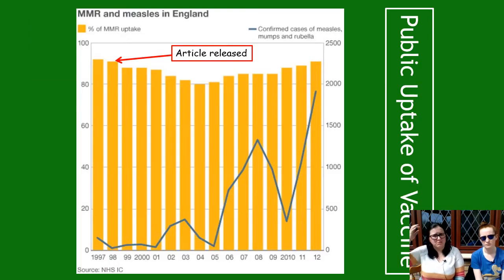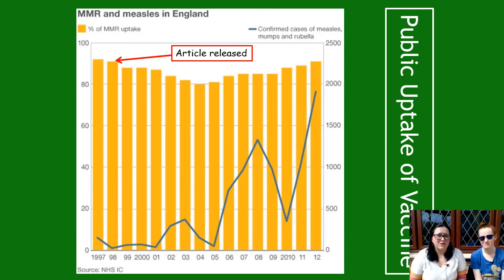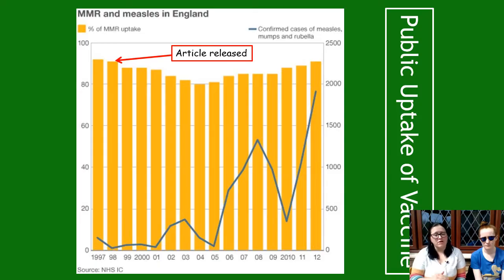This graph shows the impact of the article. The yellow bars represent people taking the MMR vaccine — you can see a steady decline from when the article was released until about 2003–2004, and then slowly climbing again as doctors and the government worked to reassure people. More alarmingly, the blue line shows confirmed cases of measles, mumps, and rubella — the three things MMR is supposed to protect against. We were near eradication in 1997 to 2000, but the drop in vaccine uptake caused huge spikes.